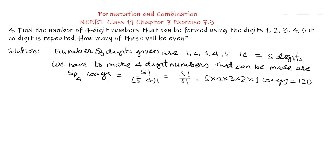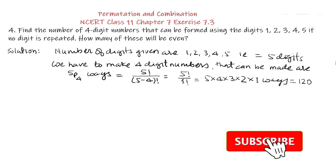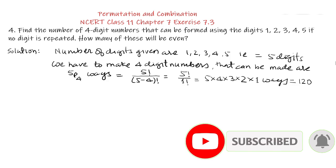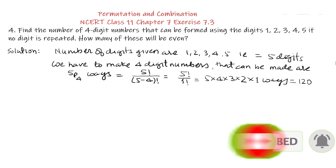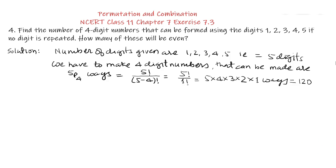After using 4 digits out of 5 digits — 1, 2, 3, 4, 5 — we can make 4-digit numbers equal to 120 numbers. The second part of the question asks: how many out of these are even numbers?